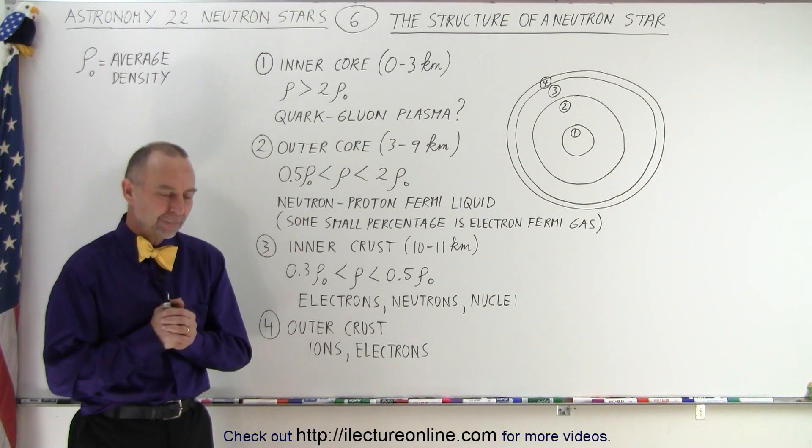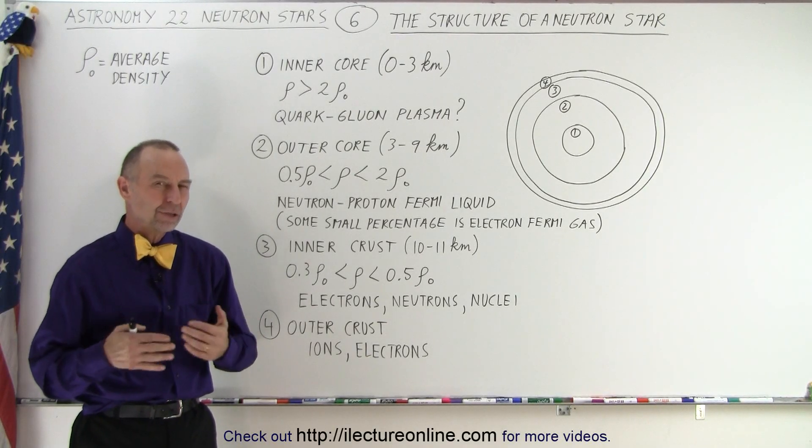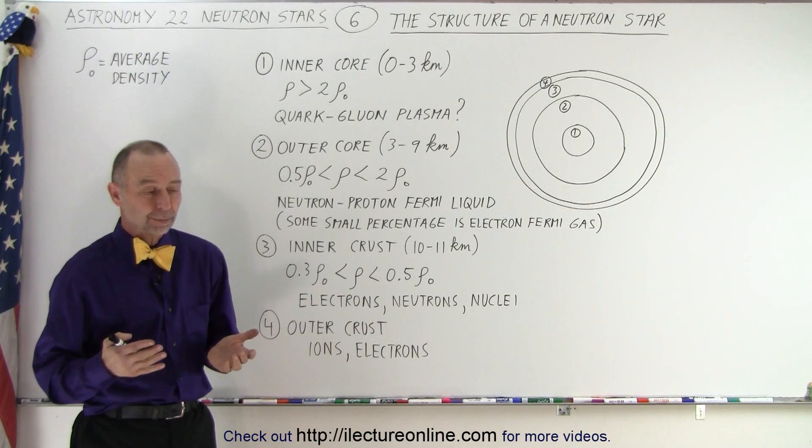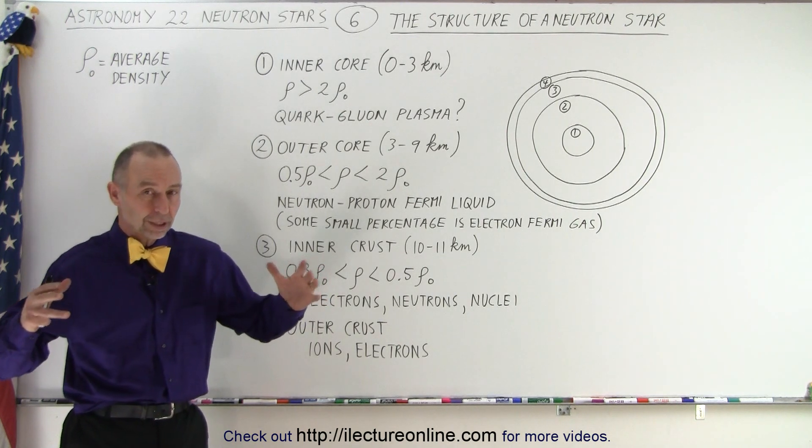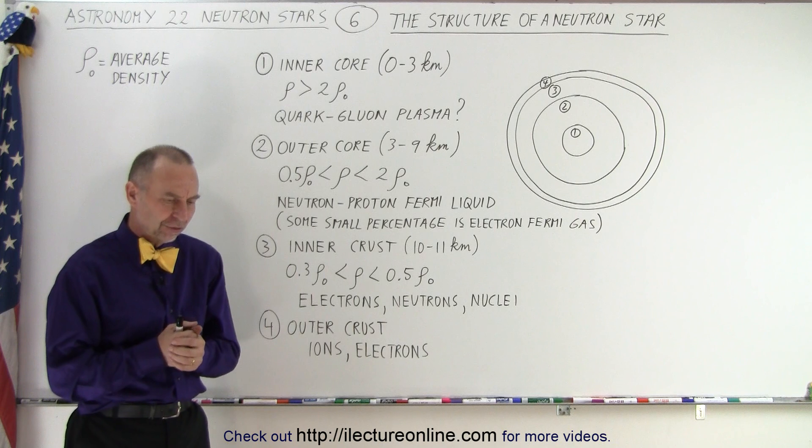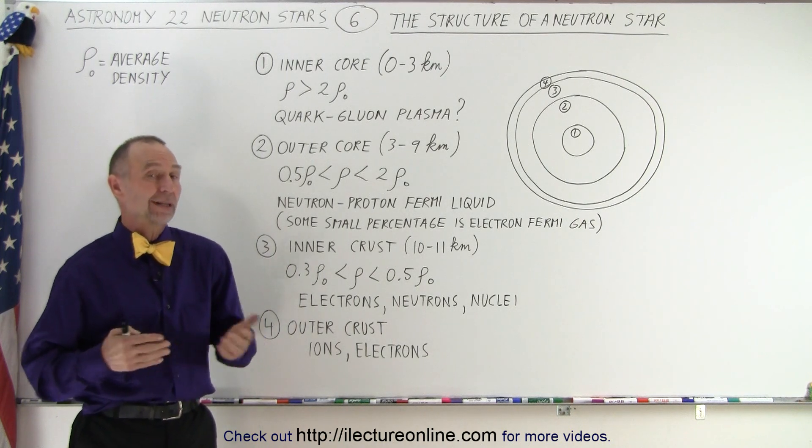Welcome to Electronline. So what is the structure of a neutron star? Well, it's simply a ball about 20 kilometers across that is filled with neutrons, protons, and electrons.